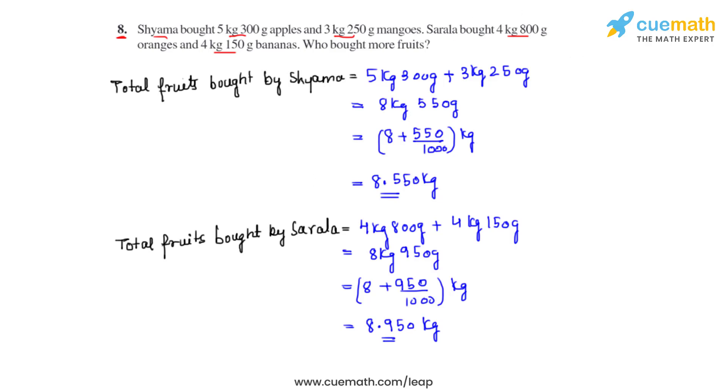By comparing 8.550 kilograms and 8.950 kilograms, we can clearly see that Sarla bought more fruits than Shama. Therefore, the answer is Sarla bought more fruits.